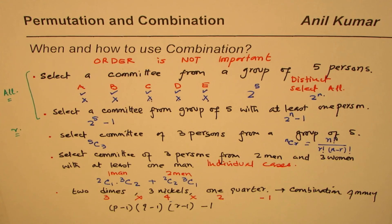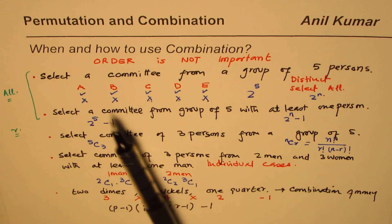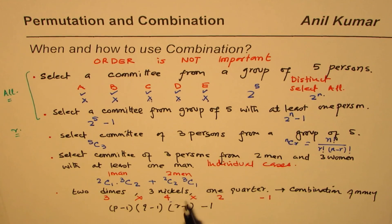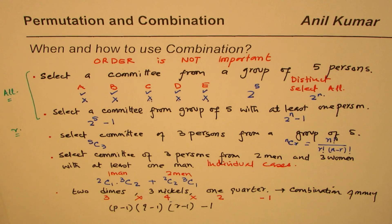The most important things to consider when solving combination problems: first, determine whether order is important or not — if order is not important, use combinations. Second, answer whether the items are distinct or not. If they are distinct, use standard nCr approaches; if some are identical, use the case-based or identical-objects formula as discussed. I'm Anil Kumar — subscribe and share. Thank you and all the best.